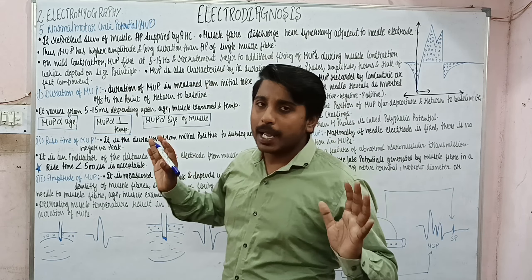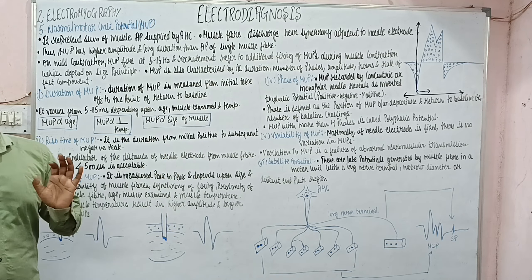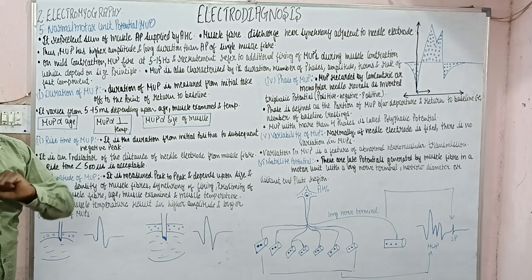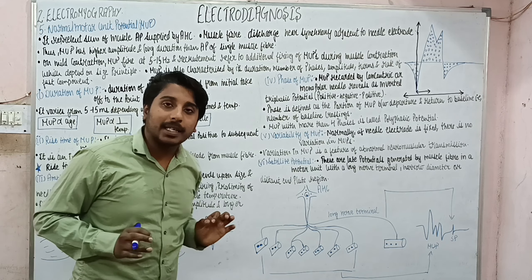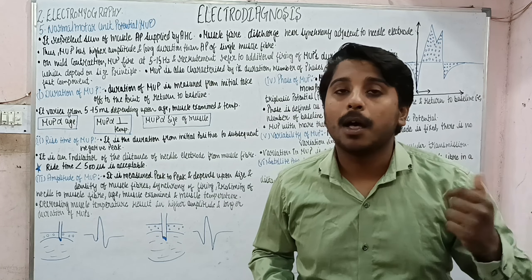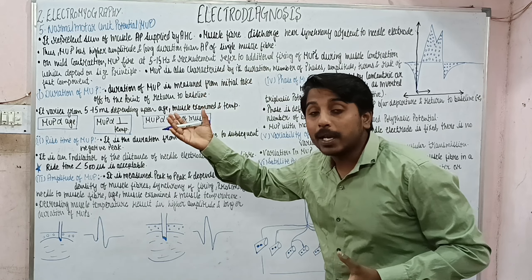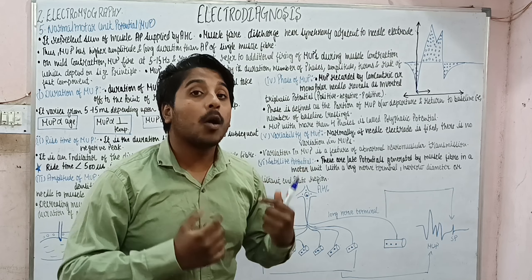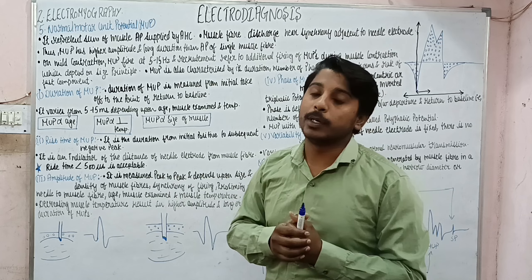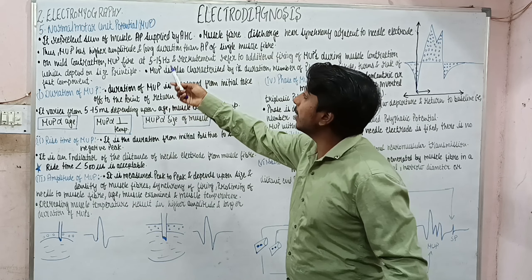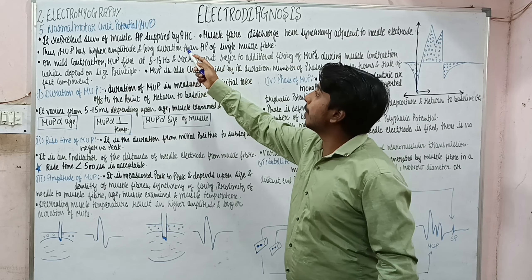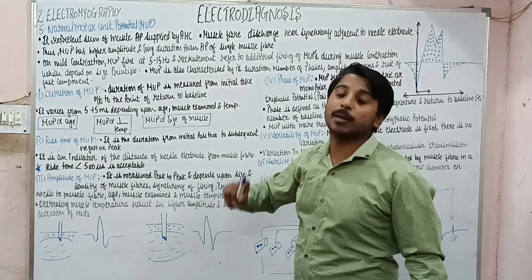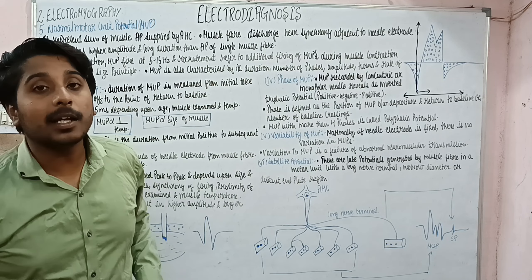This is a very easy part and just something which needs to be understood, no cramming required. So, normal motor unit potential: whenever we are taking an action potential, that is from one muscle fiber, but when we are taking the motor unit potential, it will definitely be taken from all the muscle fibers to which the motor unit is supplied. It represents the sum of muscle action potentials supplied by the anterior horn cell.